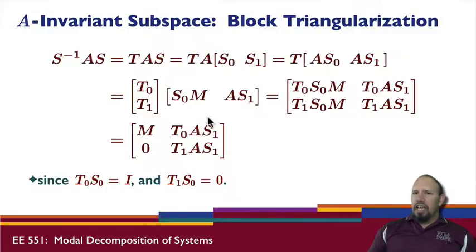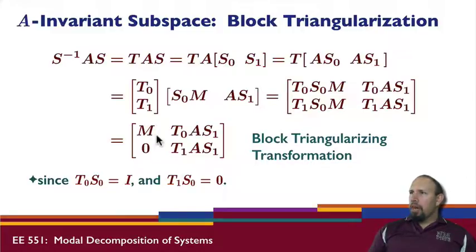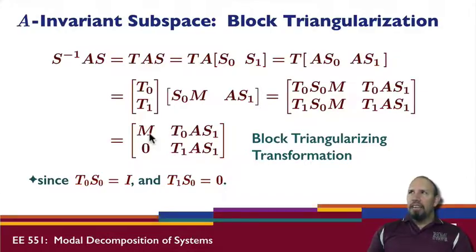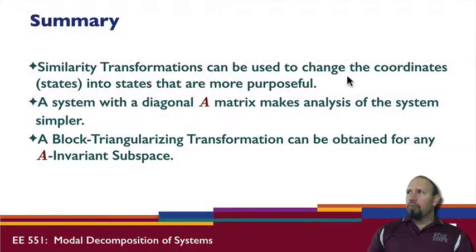This gives us a block triangularizing transformation — an upper triangular matrix with zeros below the diagonal and two diagonal square blocks. The invariant subspace leads to this block triangular form, and we'll use this property later when looking at further decompositions of systems. In summary: a similarity transformation can change coordinates into more purposeful states; a diagonal A matrix simplifies analysis; and a block triangularizing transformation can be obtained for any A-invariant subspace.